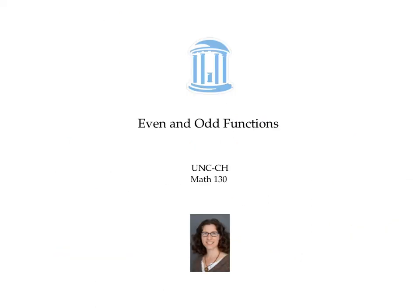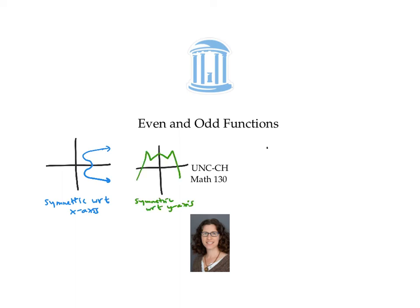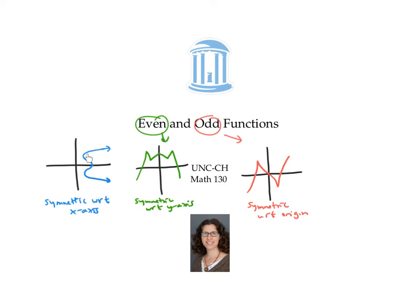In this video, we talked about symmetry with respect to the x-axis, symmetry with respect to the y-axis, and symmetry with respect to the origin. Functions symmetric with respect to the y-axis are even functions, and functions symmetric with respect to the origin are odd functions. There's no word for functions symmetric with respect to the x-axis — because if your graph is symmetric with respect to the x-axis, it's not going to be a function.